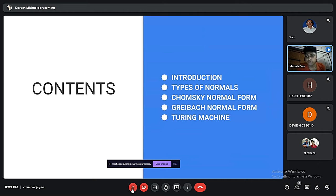We'll start with an introduction, then cover types of normal forms, Chomsky Normal Form, Greibach Normal Form, and lastly Turing Machine.